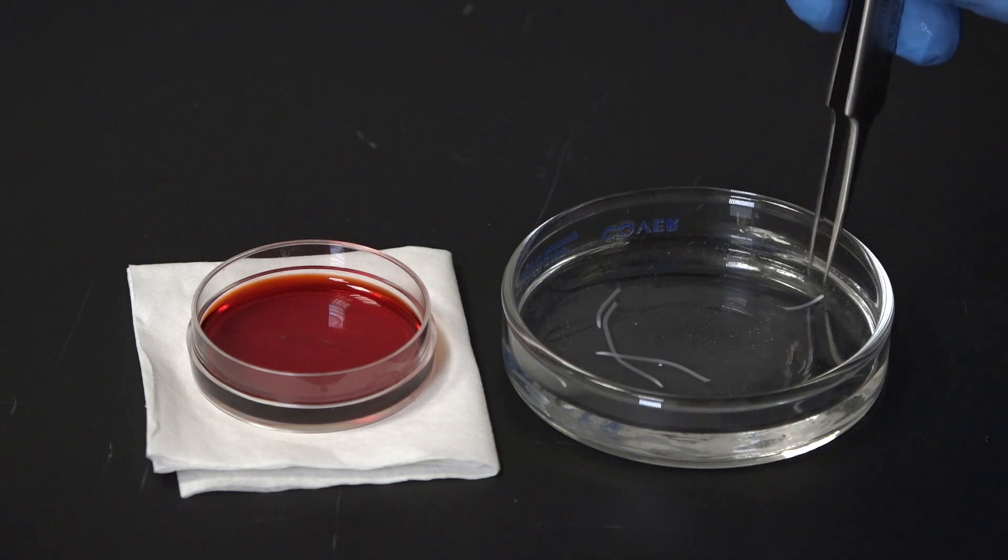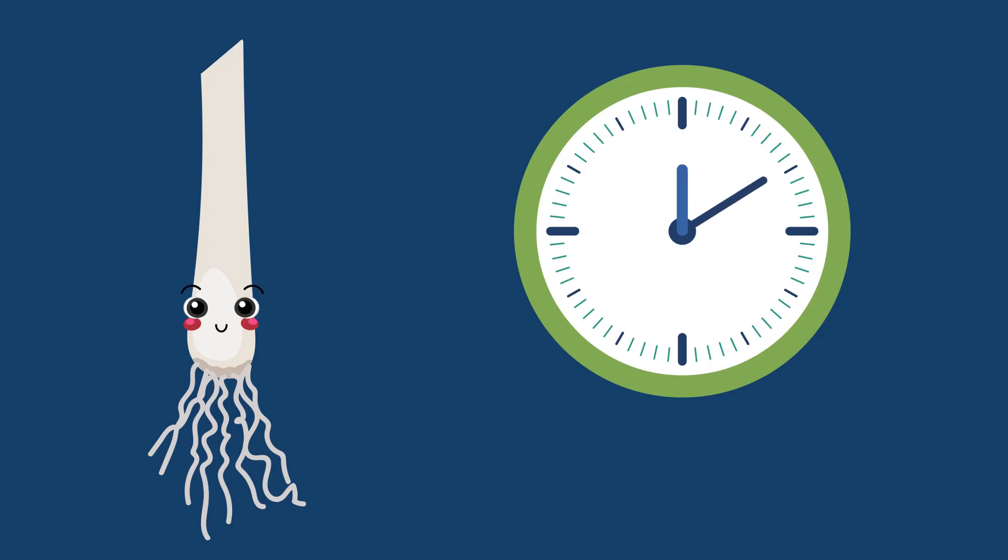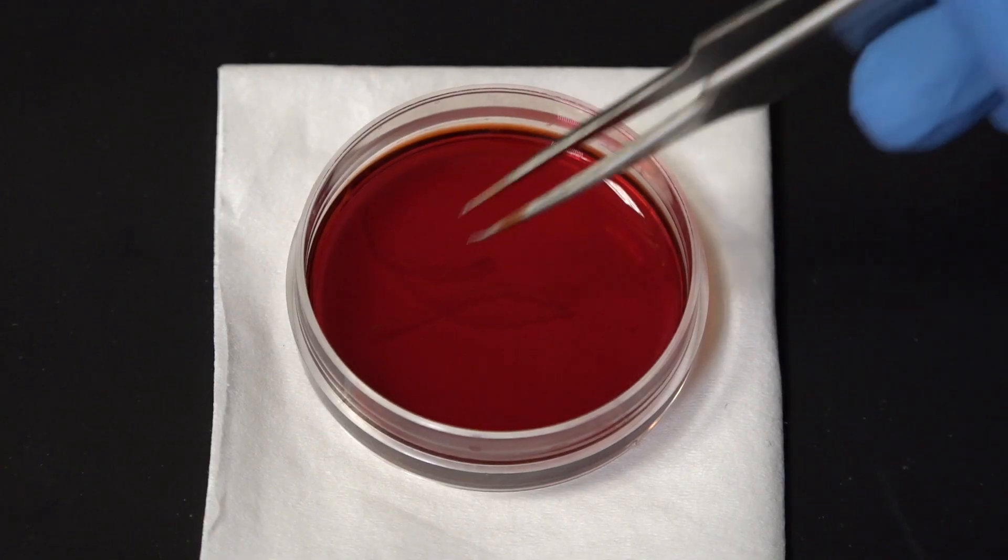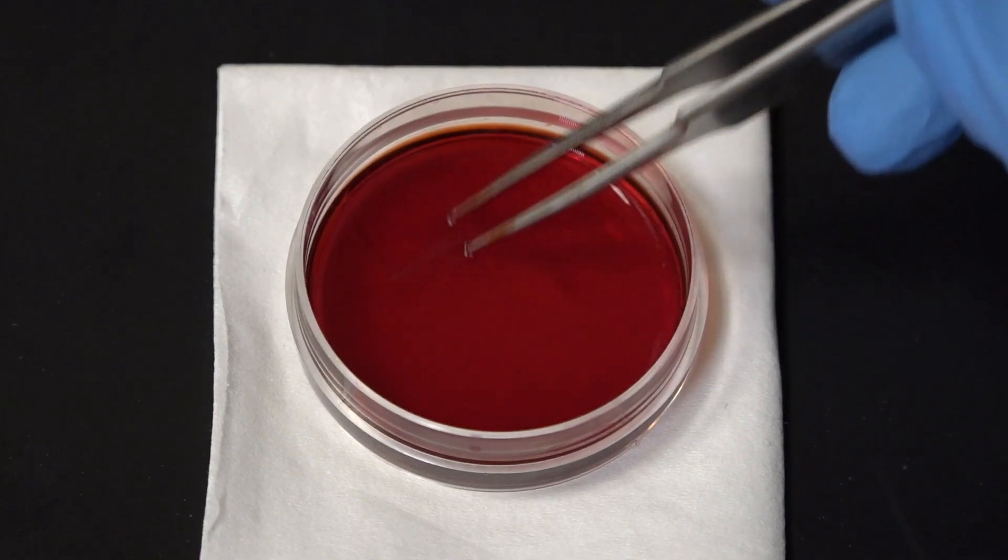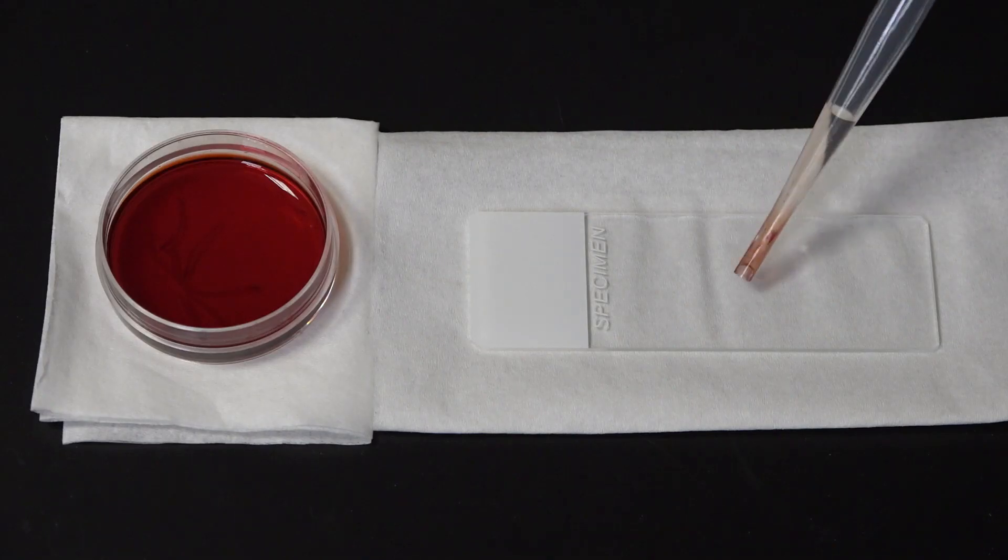Then another move to the dish of acetocarmine where they'll sit for five to ten minutes. This will stain the cell's chromatin red and allow us to see the DNA. But you can use any DNA or chromatin-specific stain for this step. And then it's just one more move to their final resting place.